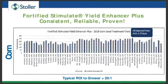Coming back to the data — through independent research last year, across 58 replicated trials on corn, we saw a 2.73 bushel yield advantage per acre. From an economic standpoint that's about a 20 to 1 return on investment to the grower. Again, our typical recommendation for Fortified Stimulate is two ounces per 100 weight of seed.